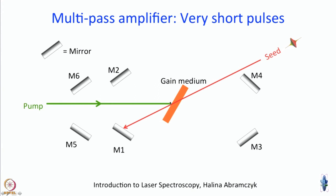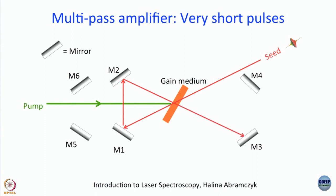If it is a Ti:sapphire crystal as the gain medium, you will typically pump it with an Nd:YAG laser or something similar. The mirrors are arranged so that after hitting M1, the beam goes to M2, and M2 sends it through the gain medium once again onto M3 — this is the second pass through the gain medium, resulting in further amplification.